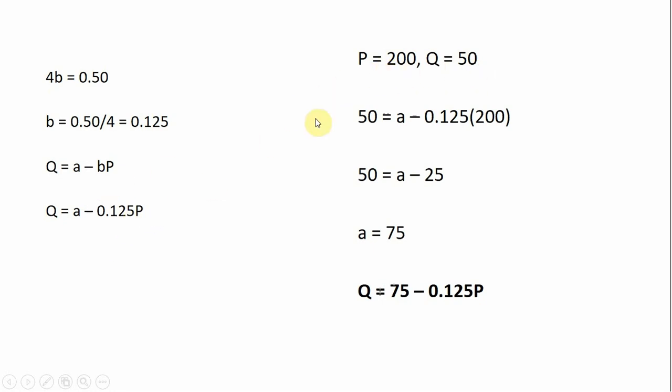We're going to do that by re-evaluating this demand equation at the equilibrium price and quantity. So we're going to plug in for P, we're going to plug in $200. For Q, we're going to plug in 50. And that's what I do in this step here. So Q is 50, P is 200, and now it's just a matter of solving for A.